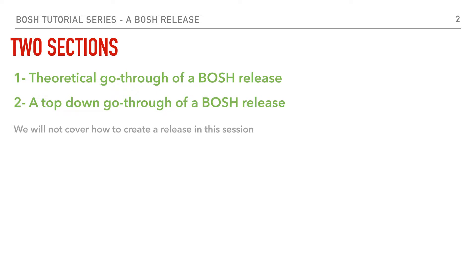In this session we'll have two sections. The first section, which is this video, we're going to go through a theoretical overview of a BOSH release and its components. In a later video, the second section, we're going to go through a top-down walkthrough of a real BOSH release that you can deploy in the real world. It's important to note that we will not cover how to create a release in this session — we're going to leave that till later as we become more familiar with BOSH terms and ecosystem.